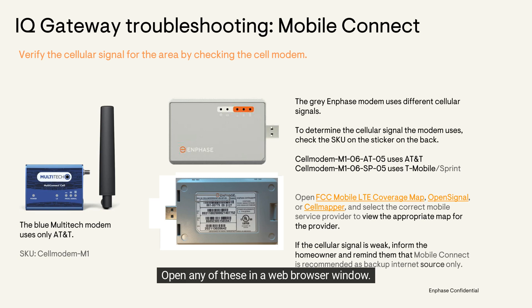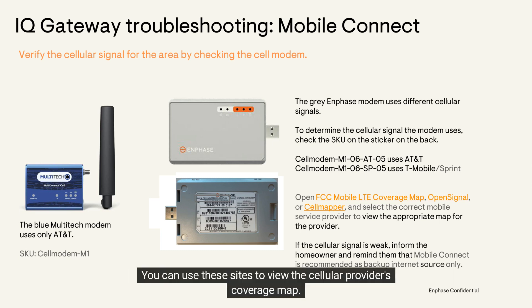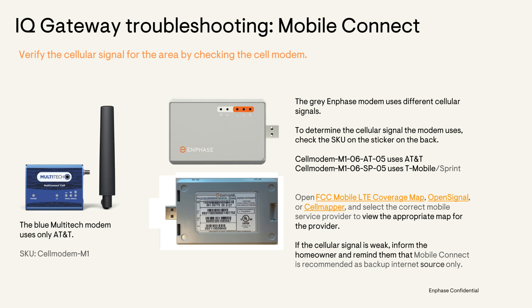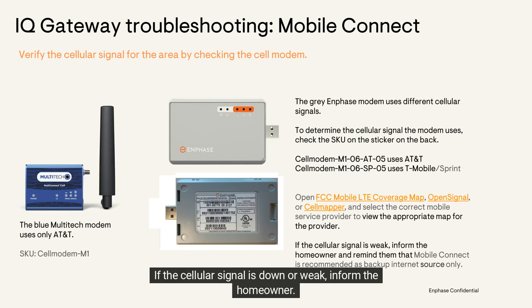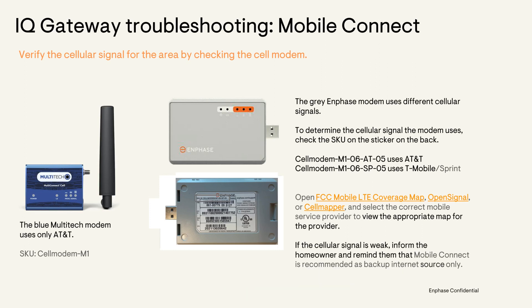Open any of these in a web browser window — links to these sites are provided in the video description below. You can use these sites to view the cellular provider's coverage map. If the cellular signal is down or weak, inform the homeowner. Remember, in most cases the cell modem is recommended as a backup connection to the internet and not the primary connection.